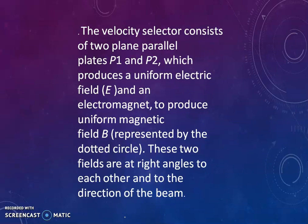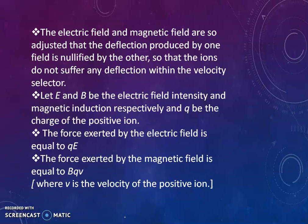The velocity selector mainly consists of two parallel plates P1 and P2 which produce uniform electric field E, and an electromagnet is used to produce the uniform magnetic field with strength B. In the previous diagram, the magnetic field is represented by the dotted circles. These two fields are right angles to each other and as well as to the direction of beam.